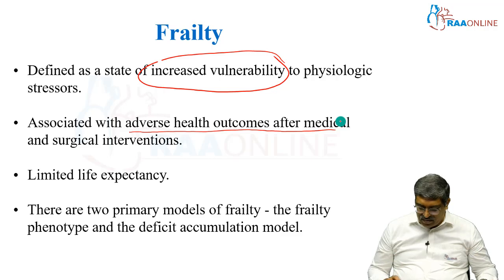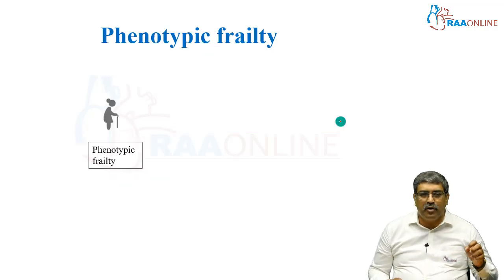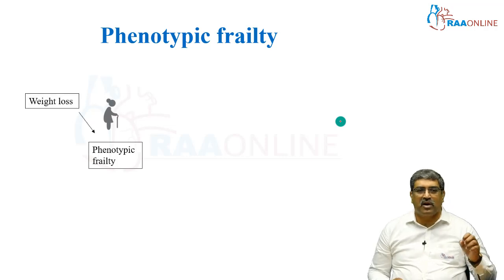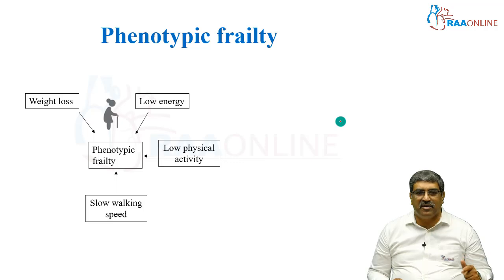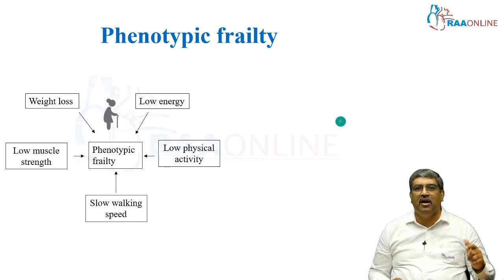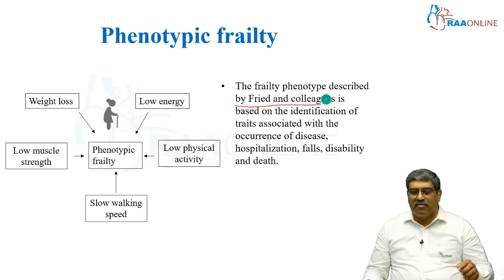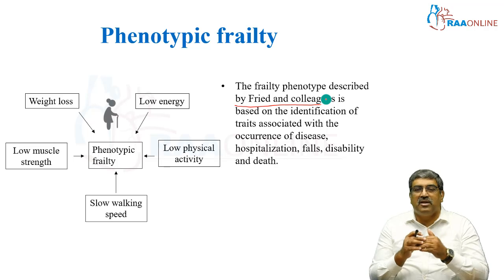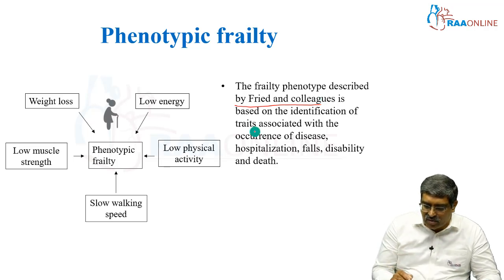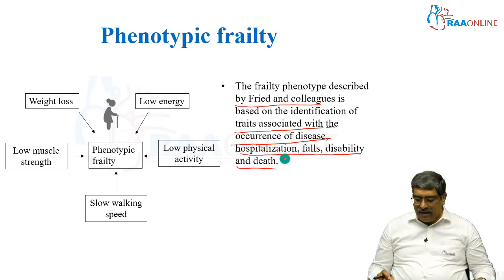One is the frailty phenotype, and another is the deficit accumulation model. In the phenotypic frailty, you look at weight loss, energy, low physical activity, slow walking speed, and low muscle strength. This is described by Fried and colleagues, and it is based on the identification of traits associated with occurrence of disease, hospitalization, falls, disability, and death.